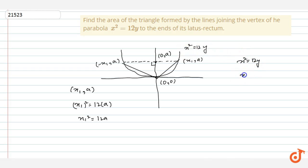We have the equation x² = 12y. Comparing this equation with the general equation x² = 4ay, we get 4a = 12 and a = 3. Putting the value of a, we get x₁² = 36, so x₁ = 6.